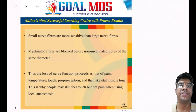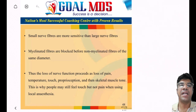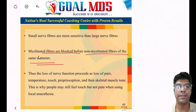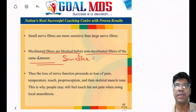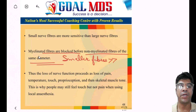The sensory and motor fibers are equally sensitive to local anesthesia. Small nerve fibers are more sensitive than large nerve fibers. The sensitivity to local anesthesia is determined by the diameter of the nerve fibers as well as the fiber type. Myelinated nerve fibers are blocked before non-myelinated fibers of the same diameter. Smaller sensory fibers are more vulnerable to blockage because they generate high-frequency, long-lasting action potentials compared to motor fibers.